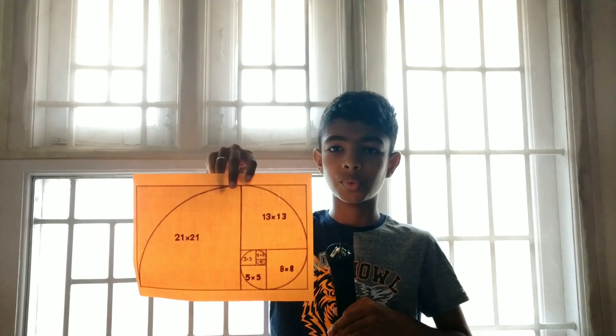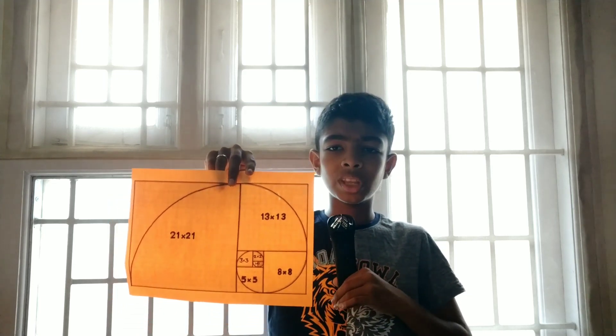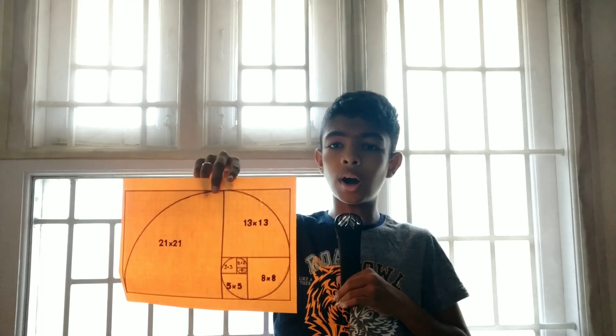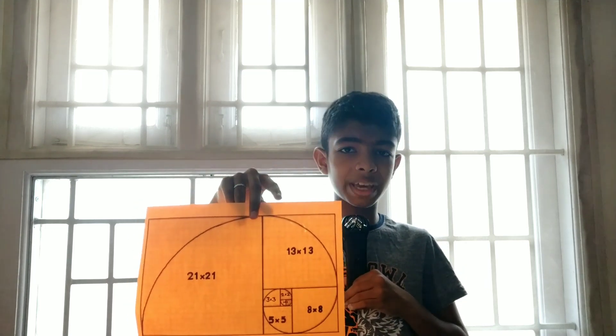Now let us see other applications in nature, such as in shells and the galaxy. We can represent the Fibonacci series as squares: draw a square of side 1 cm, another adjacent square of side 1 cm, then a square of side 2 cm, then 3 cm, and so on. If we draw quarter-circle arcs inside each square, they form a spiral — known as the Fibonacci spiral.